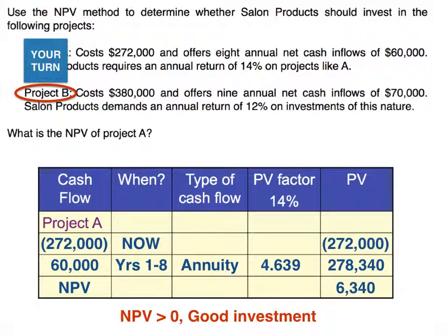Keep in mind that net present value doesn't tell you what the return actually is. It only tells you whether you're getting more than your required rate of return, whether you're exactly meeting it (net present value = zero), or not getting your required rate of return (net present value is negative). In this case, we know we're getting more than our required rate of return, but it's probably not a lot more because the net present value is a pretty small number.